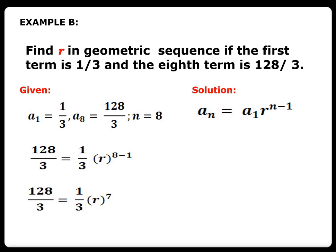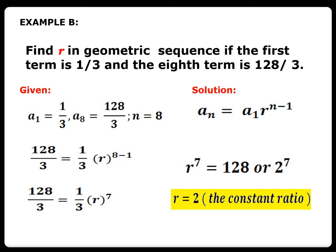To simplify, we have 128 over 3 equals one-third times r raised to 7. We need to solve for r itself. So r raised to 7 equals 128, and 128 can be expressed as 2 raised to 7. They have the same exponent, so all you need to do is copy the base. Therefore, r is equal to 2, and that is the constant ratio.